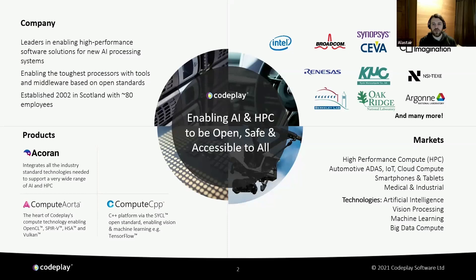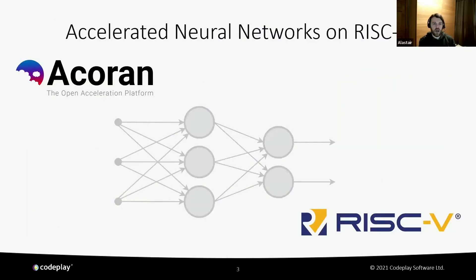Codeplay is based in Edinburgh, Scotland with around 80 staff, mostly engineers working on open standards projects. Our goal is to make AI and HPC open and safe to everyone by contributing to open standards and participating in open source projects. The company designs and implements programming models, compilers and tools for multiple vendors. I'm going to talk about how our teams are bringing together open standards and open source technologies to enable complex applications for RISC-V vector processors, and how this can be adapted for a wide variety of specialist accelerator architectures.